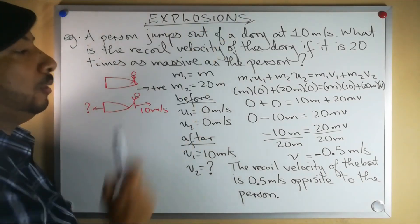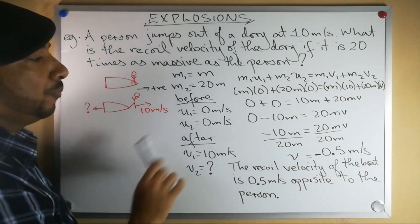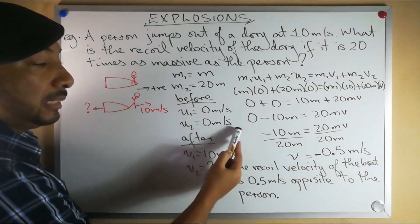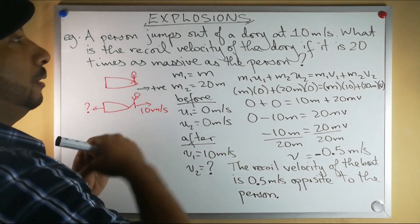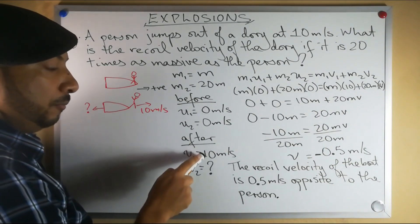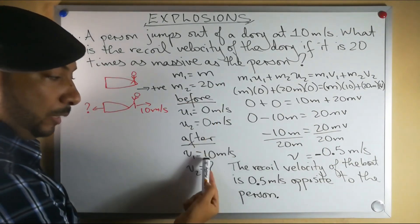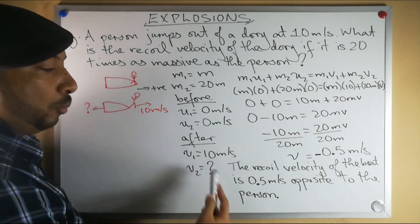Before this explosion occurred, both of them were together. Let's assume that they were stationary. If they were stationary then both initial velocities will be 0 meters per second. After the explosion, after the person jumped off the dory, her velocity was 10 meters per second. We chose right to be positive, so that's a positive 10 meters per second.